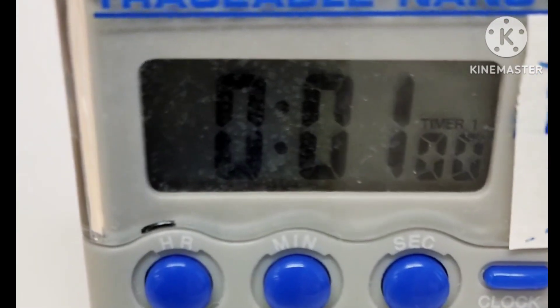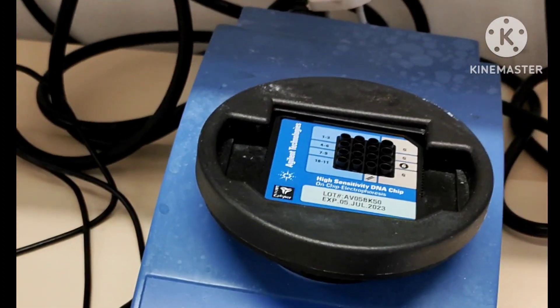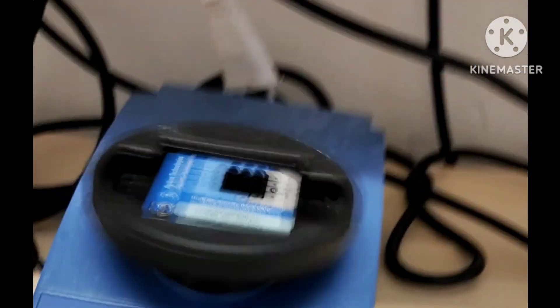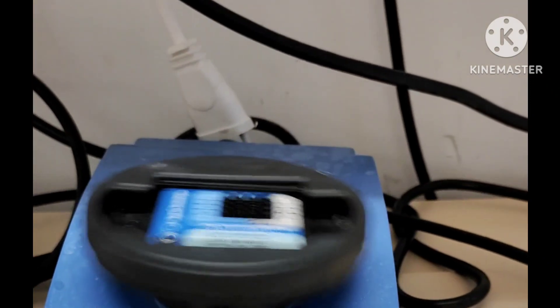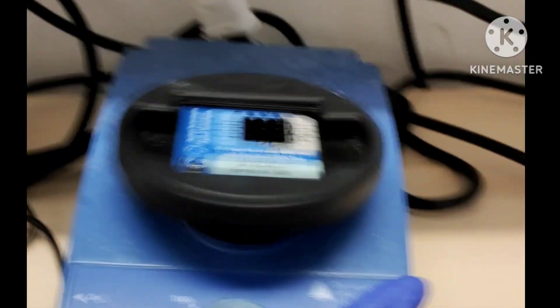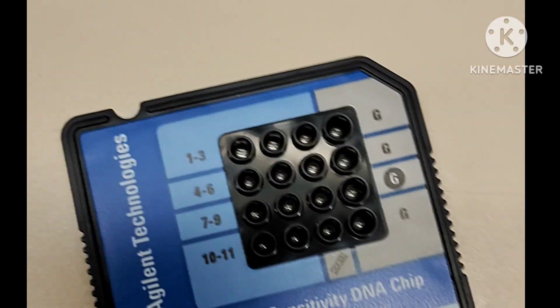Now set the timer to one minute, then place the chip on the vortex mixer and turn on the vortex for one minute.